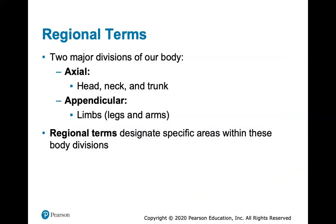The two major divisions of the body are axial and appendicular — you probably learned the axial skeleton and the appendicular skeleton in anatomy. Axial has to do with the head, neck, and trunk, and appendicular has to do with your limbs, your legs and arms. Regional terms will designate specific areas within these body divisions.